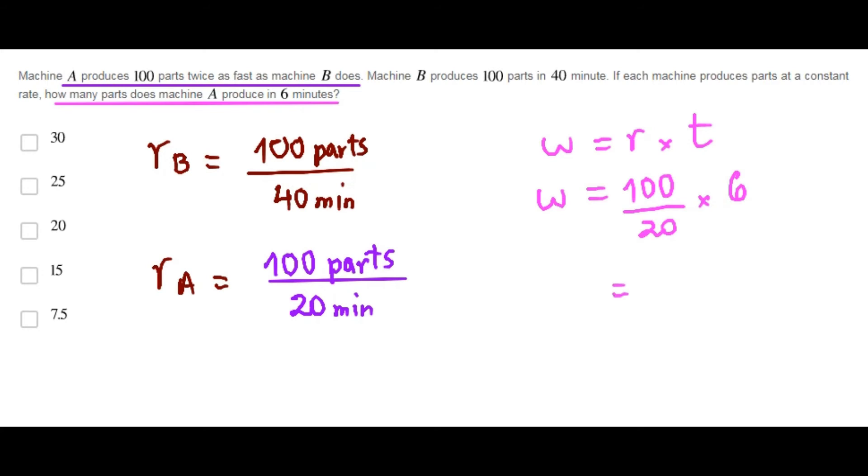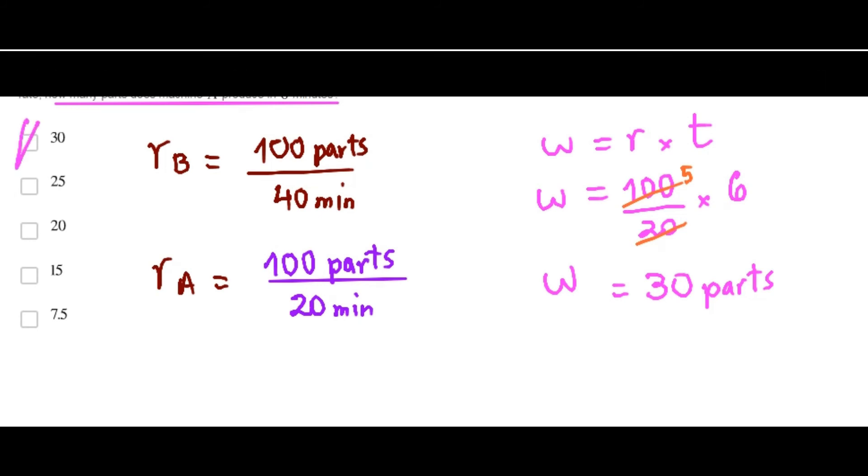Finally, this is 5. Machine A does 30 parts in 6 minutes. Choice A is correct.